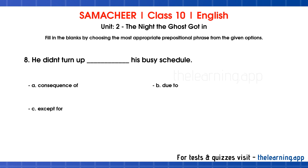Question 8: He didn't turn up — his busy schedule. Options are: a. Consequence of, b. Due to, c. Except for. Correct answer is b. Due to.